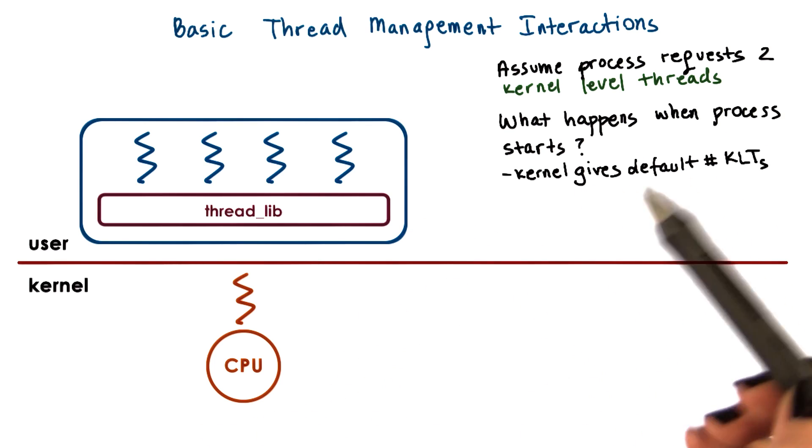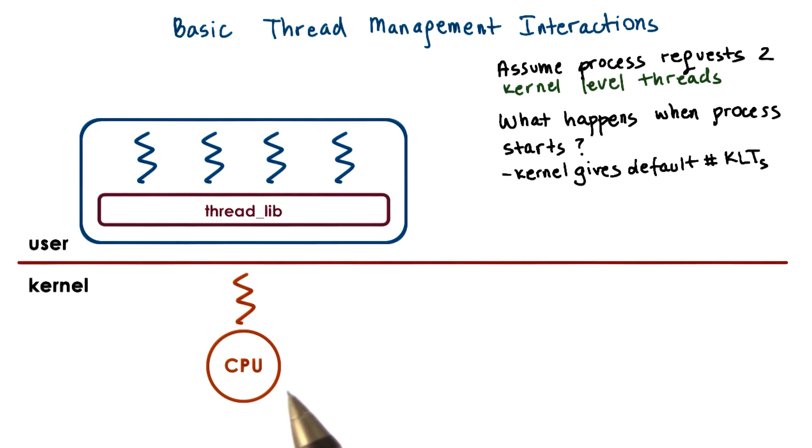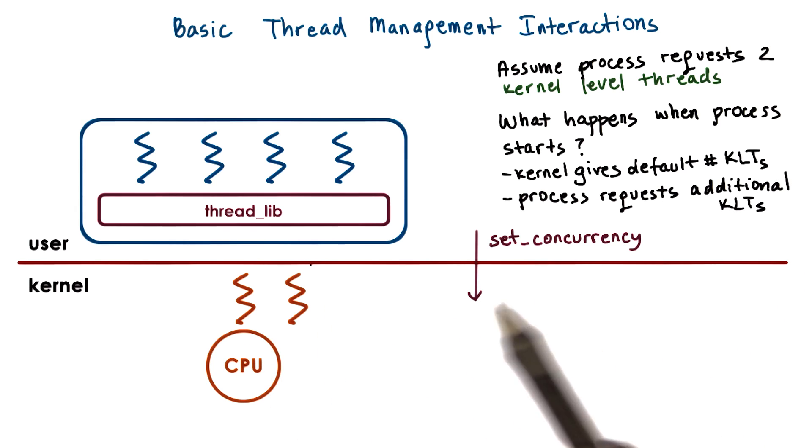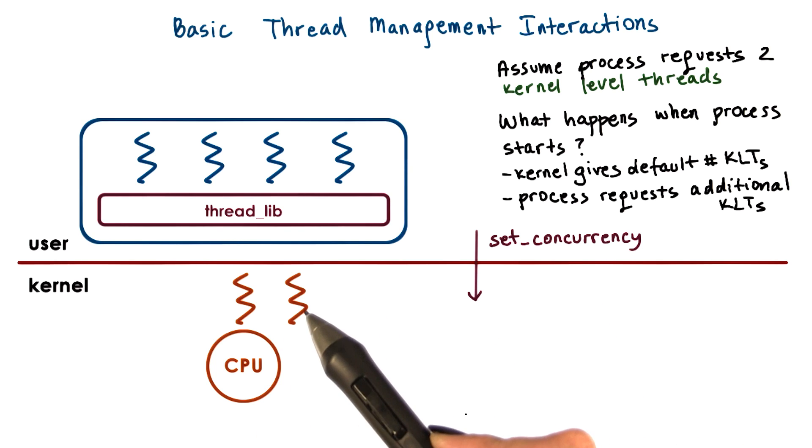When the process starts, the kernel gives it a default number of kernel-level threads and accompanying lightweight processes—let's say one. Then the process can request additional kernel-level threads using a system call called set_concurrency. In response, the kernel creates additional threads and allocates them to the process.